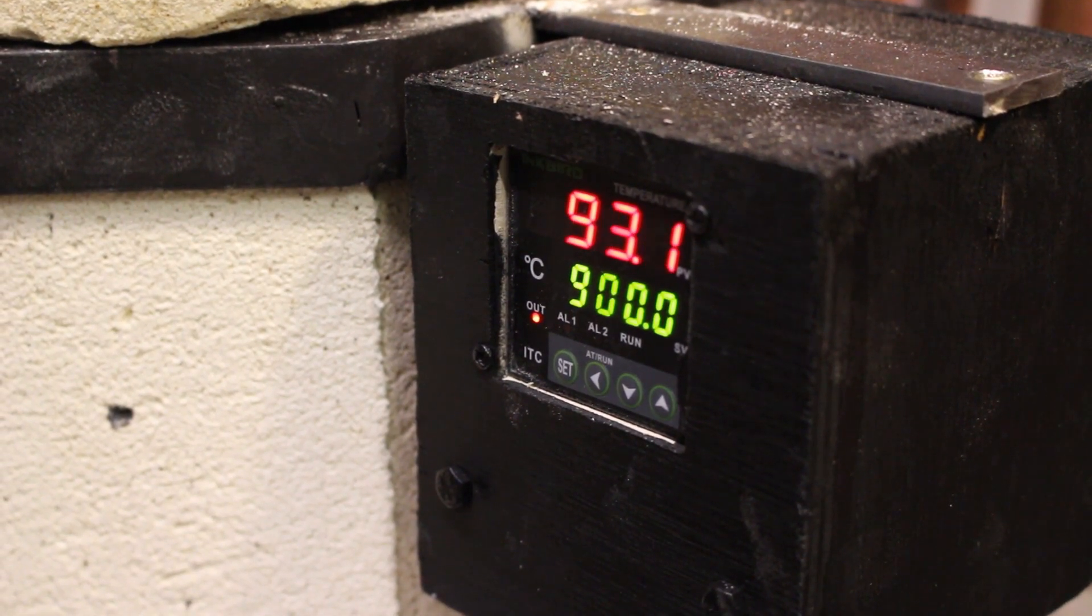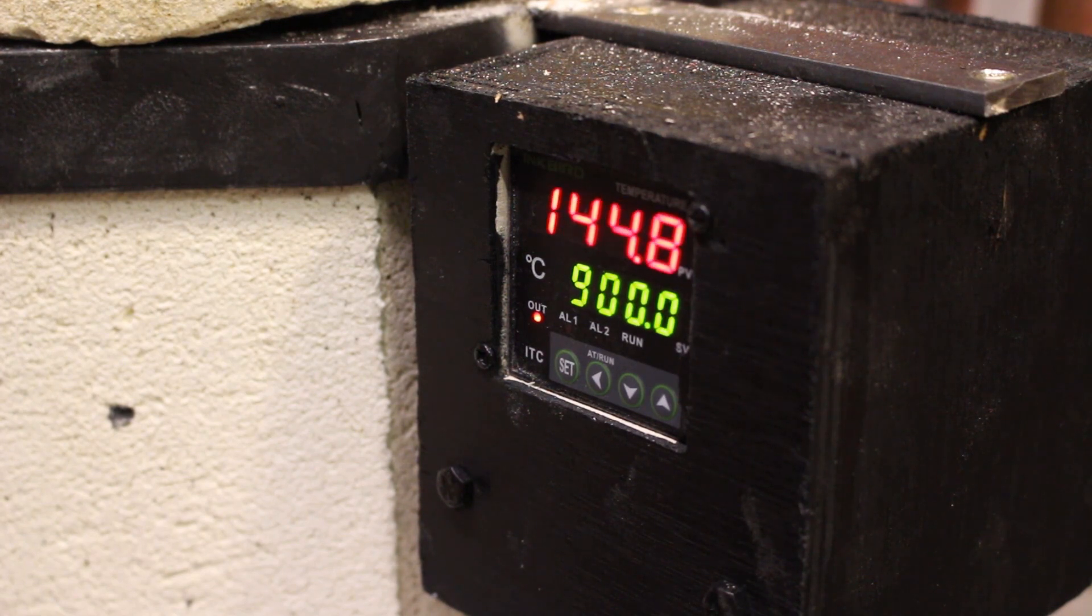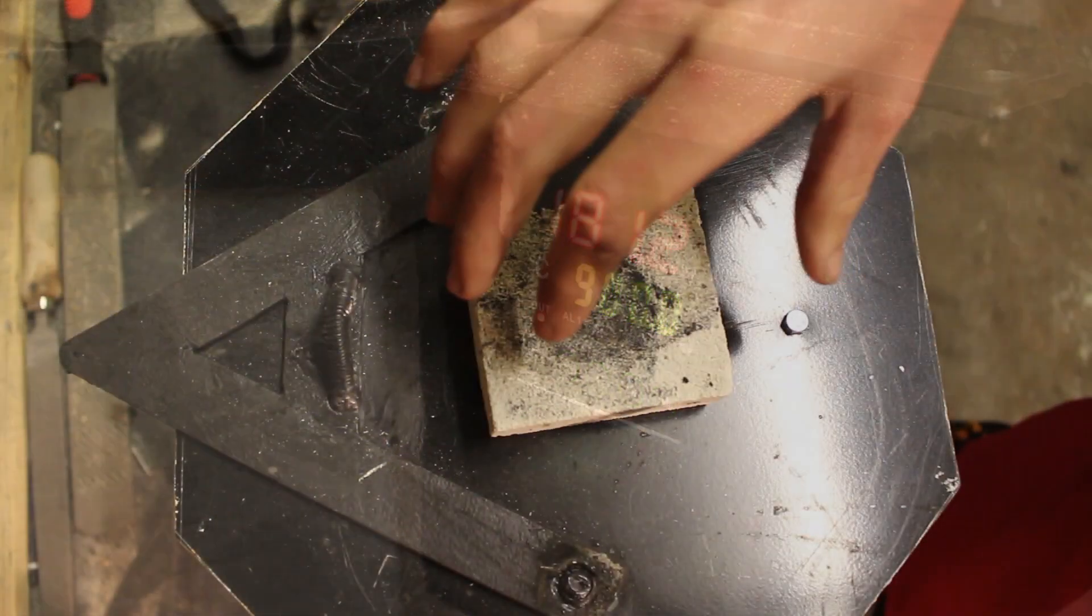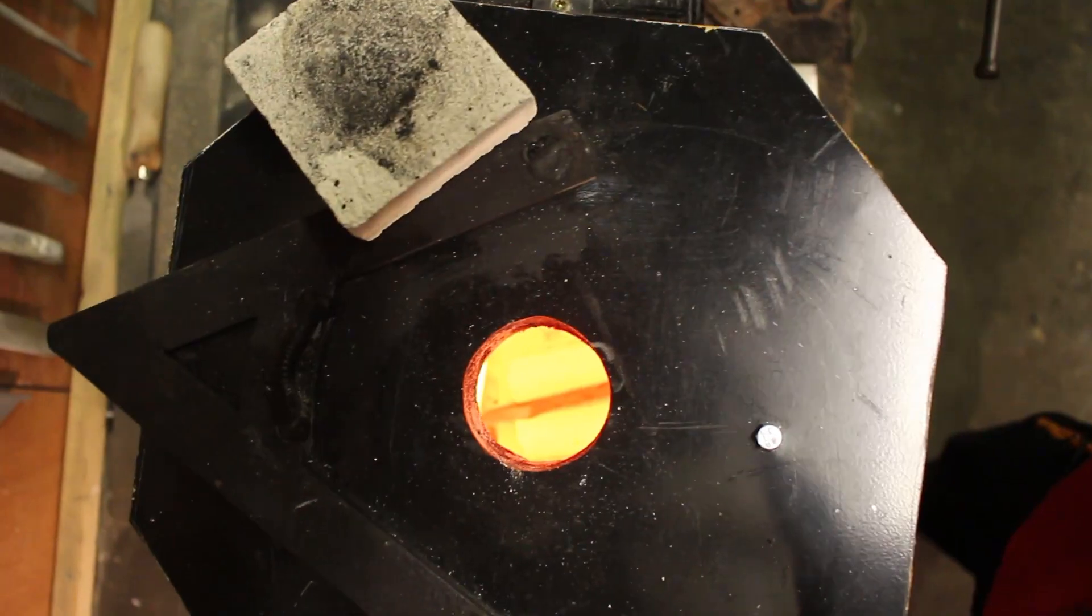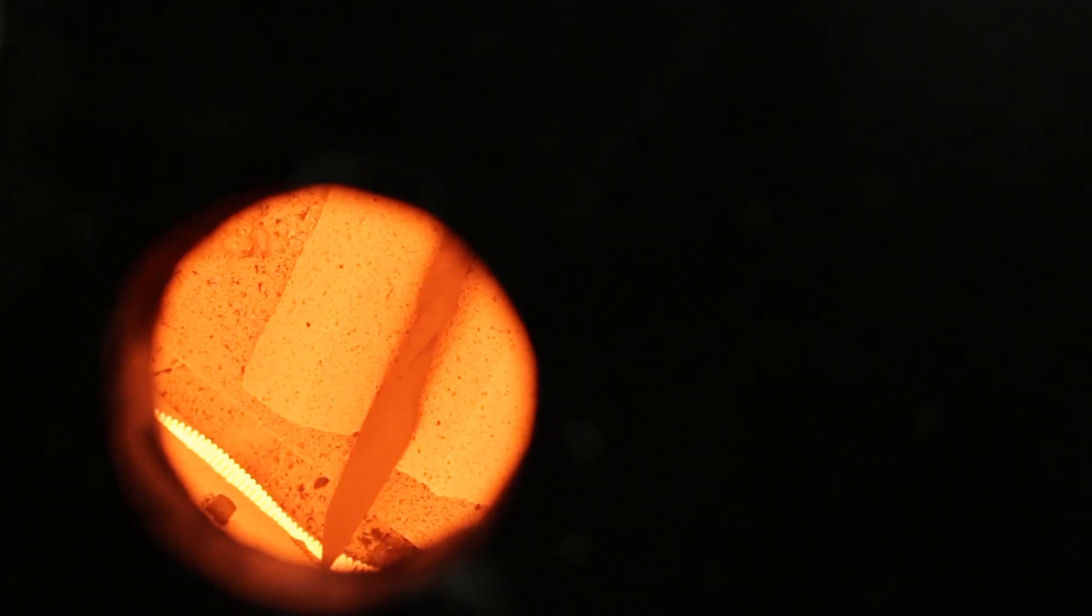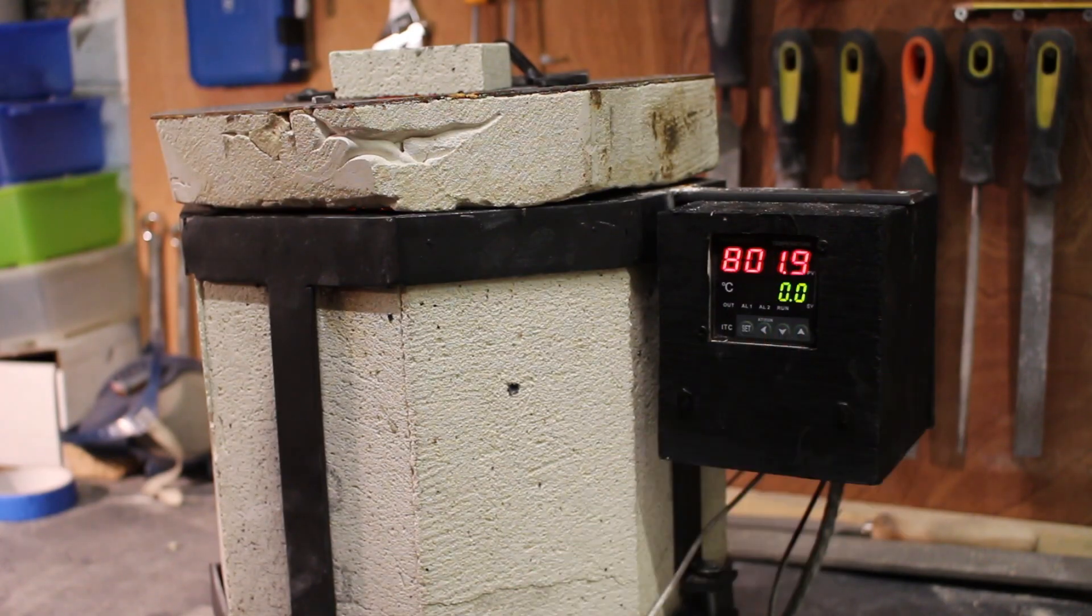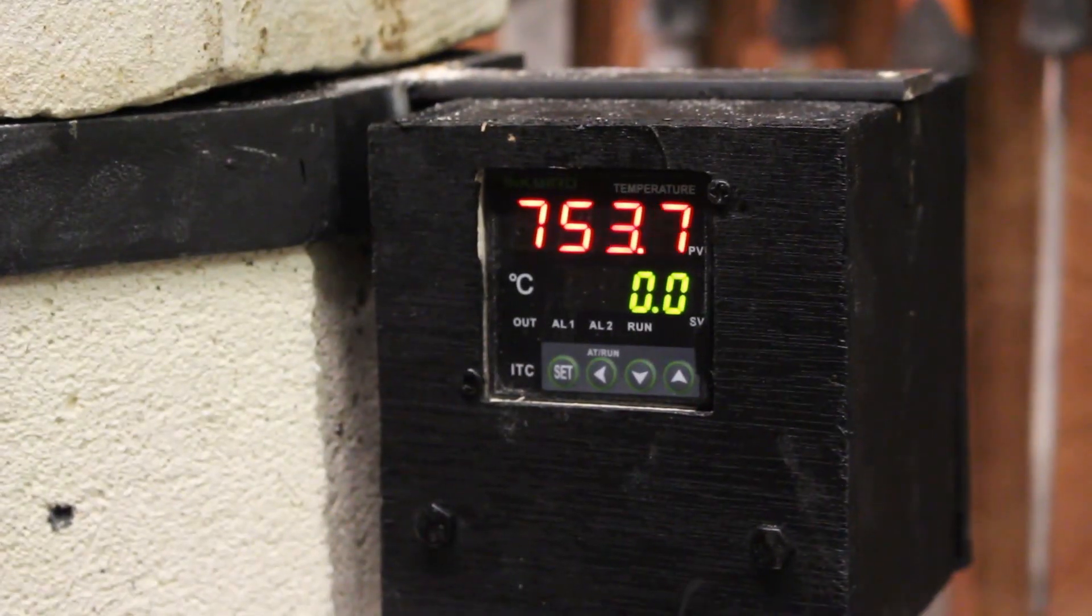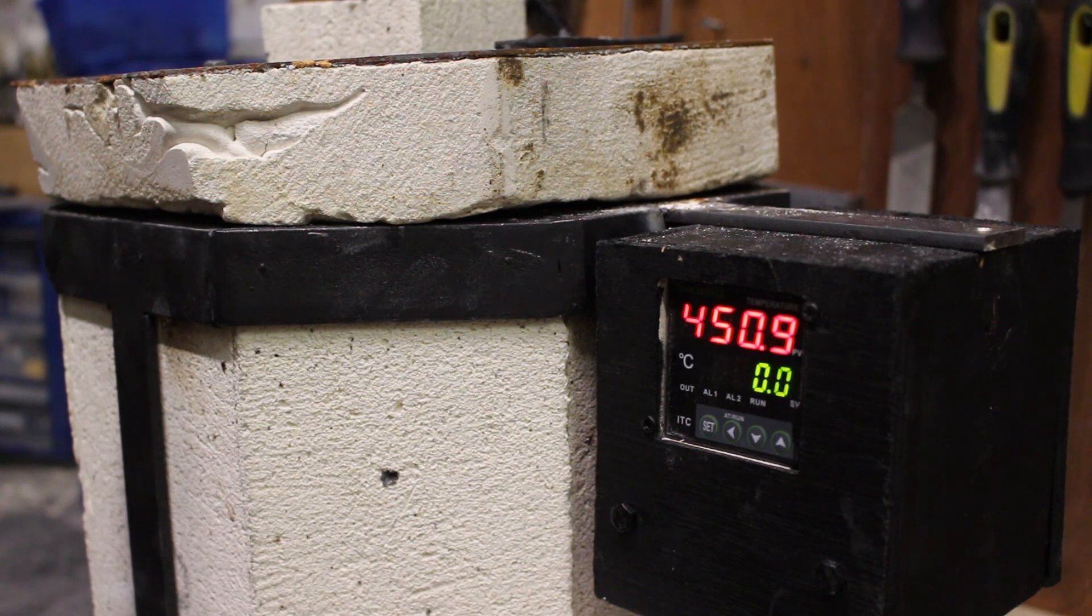However, before heat treatment I wanted to anneal the knife properly and normalize it since it's already cracked once. I don't want to risk it happening again. This is done by heating the blade to around 900 degrees celsius at which point the blade grain structure starts to repair itself and relieve all of the stresses inside the steel caused by forging. I then basically turned off my foundry and let the blade slowly cool down inside it, and it took around 3 hours for it to cool down below 100 degrees celsius, so this was very good for the steel.